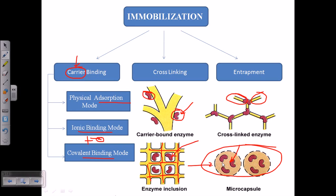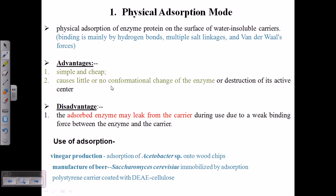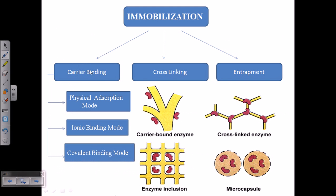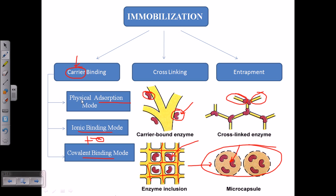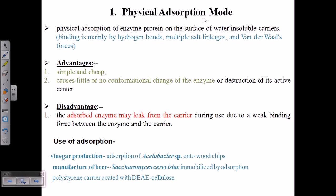A cellulose coat or cellulose vehicle is used, inside which enzymes are delivered. Let's begin with the physical adsorption mode, which is a carrier binding type. We will see three types: physical, ionic, and covalent. In physical adsorption mode, the binding is mainly by hydrogen bonds, multiple salt linkages, or van der Waals interactions.